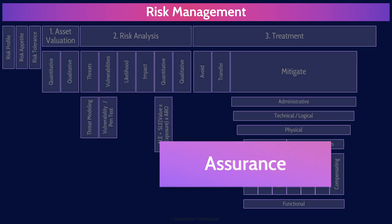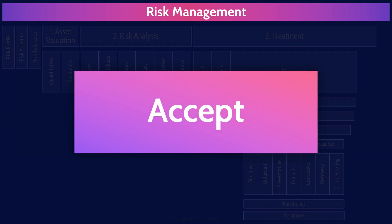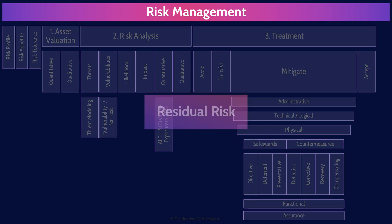Risk acceptance is a deliberate decision to accept a certain level of risk and its potential consequences. Who within an organization should be accepting the risk associated with a particular asset? The asset owner — owners are accountable for the security of an asset, so they're best positioned to deliberately accept a risk. Residual risk is the risk that remains after compensating controls have been implemented. There is always going to be residual risk, and very importantly, residual risk should be accepted by the asset owner.